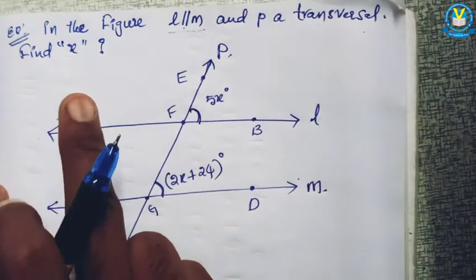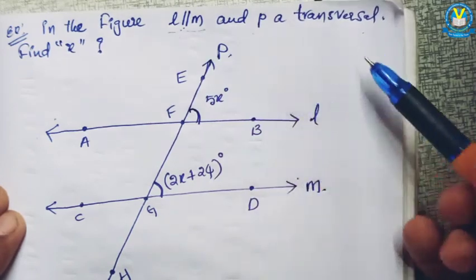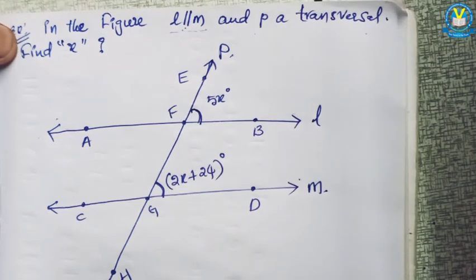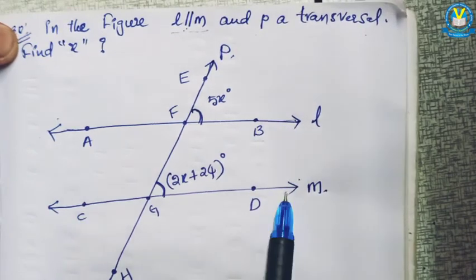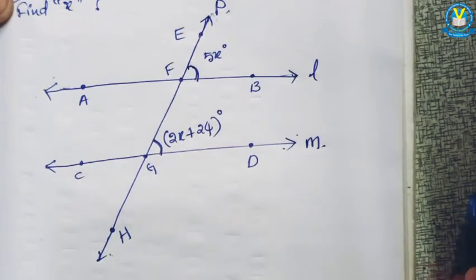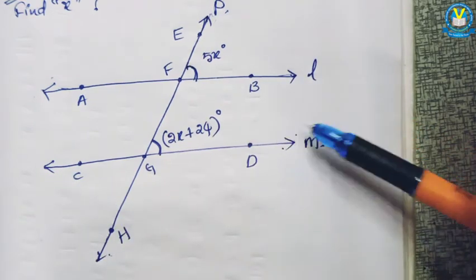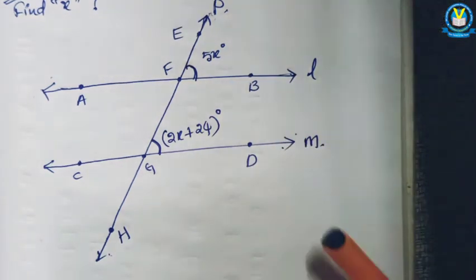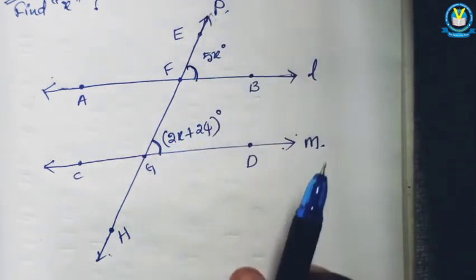Observe this example. In this figure, L and M are parallel lines — this symbol denotes parallel — and P is the transversal of these two lines. Find the x value. Observe the diagram: it is line L, it is line M, P is transversal of both L and M. Parallel lines means when two lines do not combine with each other at any place. Transversal means a line that can combine at any place — that is called a transversal.